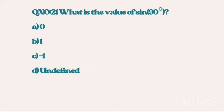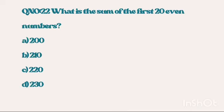Question number 21. What is the value of sin 90? 1 is the right answer. Question number 22. What is the sum of the first 20 even numbers? 220 is the right answer.